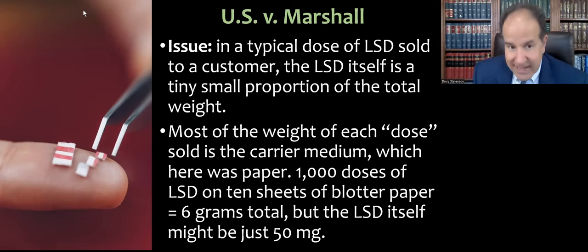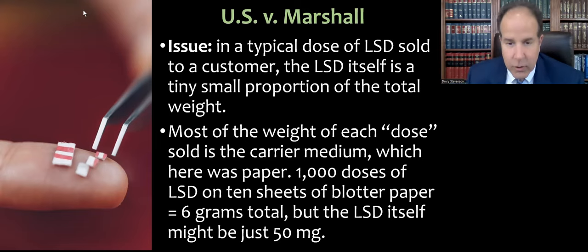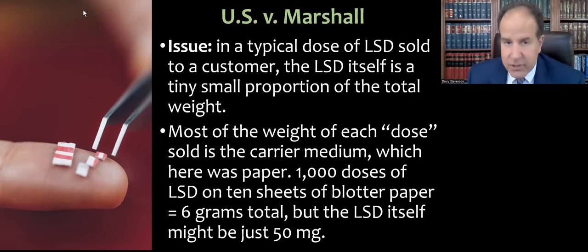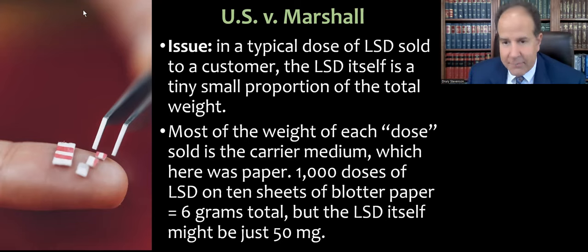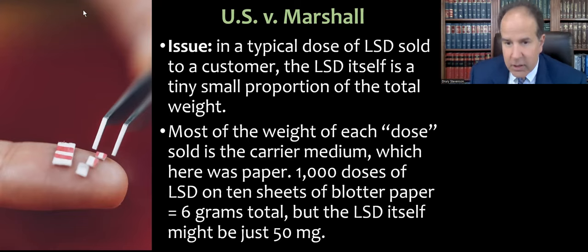You cut off a tiny square of the paper — small enough to pick with tweezers — and when you drop that in a glass of water or orange juice, the LSD will leach out. This means you can fit 100 doses on one sheet of blotter paper, so 1,000 doses would be on 10 sheets. Ten sheets of blotter paper weighs 6 grams, but the actual LSD present would be just 50 milligrams.